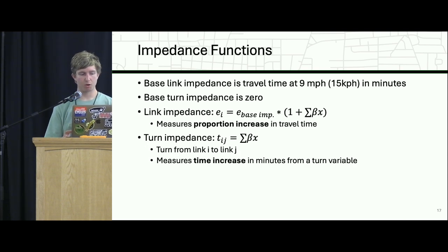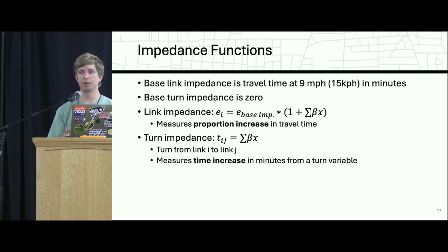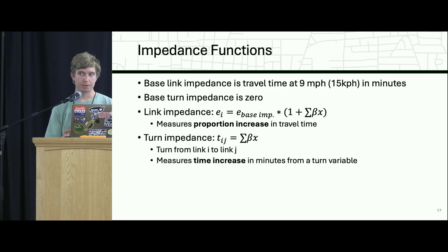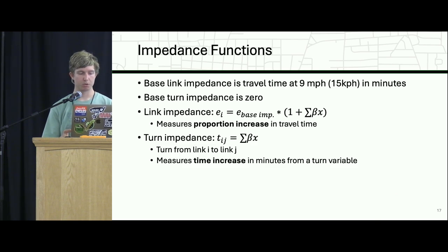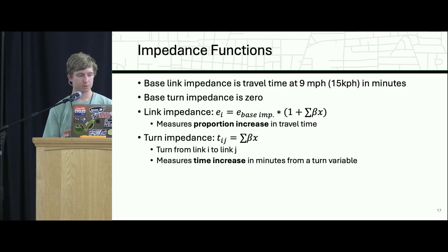For our impedance functions, we started with the basic link impedance as travel time, cycling at nine miles per hour — Atlanta is hilly and has a lot of signals, so that's a pretty leisurely pace. Our basic turn impedance started at zero. The link impedance function includes an additional factor of (1 + Σβ·X), where each beta represents a coefficient we're selecting and X is the zero-or-one variable value. So beta essentially measures the proportional increase in travel time. For turn impedance, because there is no base impedance, beta measures the time increase directly.